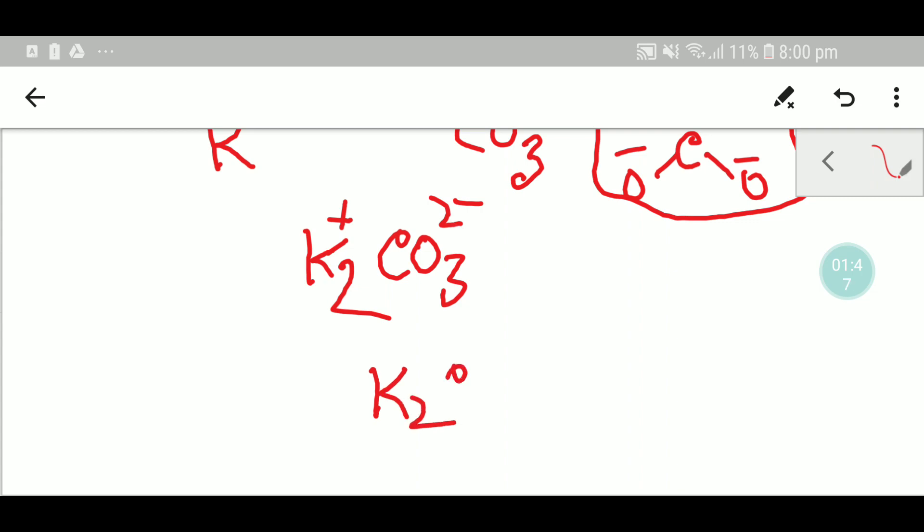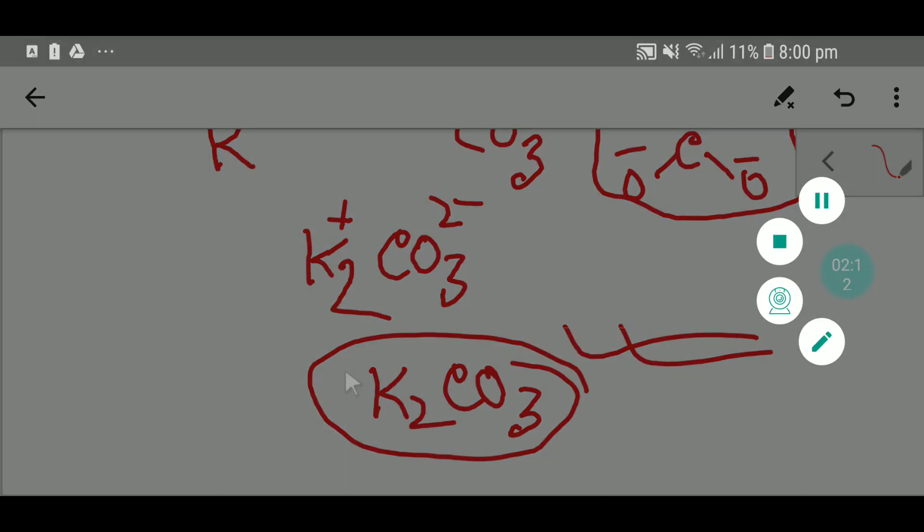So this is potassium carbonate, K2CO3. I will have a blog post on the chemical structure of potassium carbonate. You will get that blog post in the description box of this video. So read that blog post. Thank you for being in this video. Be well. I'll see you next time.